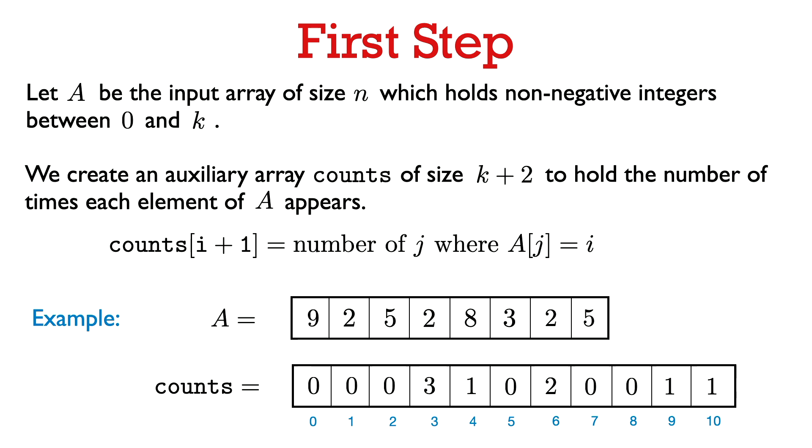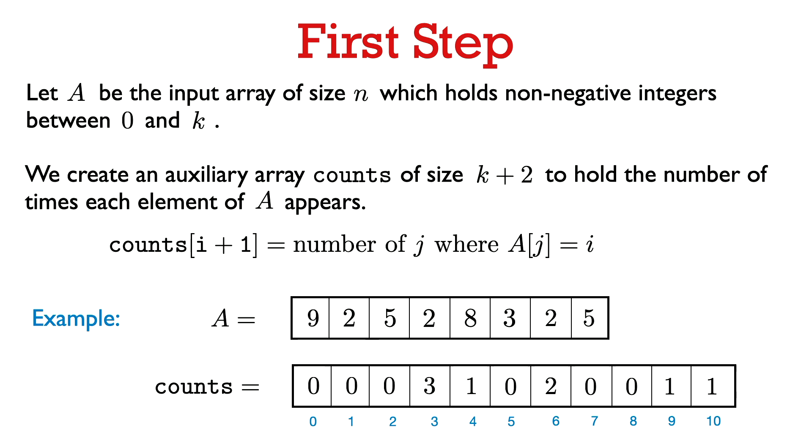It may seem strange that we use counts[i+1] to hold the number of times i appears instead of counts[i], but we do this for a reason — it's going to make the next step a bit simpler. In an example of this first step, we iterate through A. First we see a 9, so we increment counts[10]. Then we see a 2, so we increment counts[3]. The value 2 actually appears 3 times in the input array, so at the end of this first step, counts[3] equals 3. This can be done in one pass through A in time O(n).